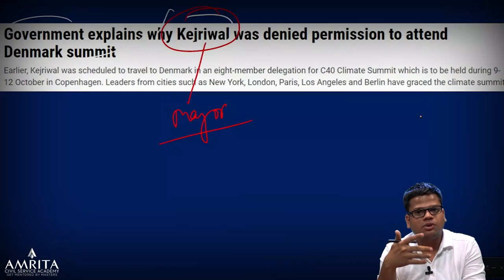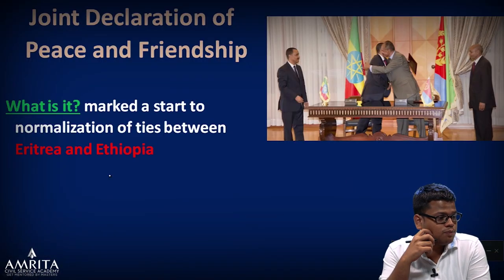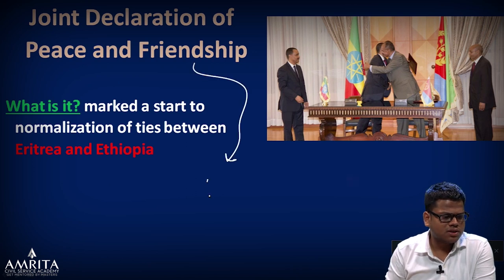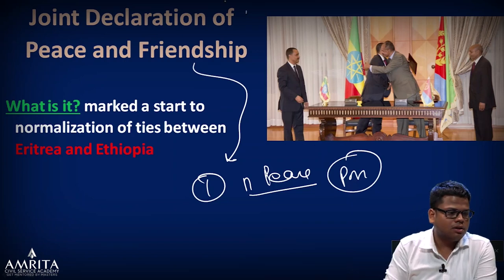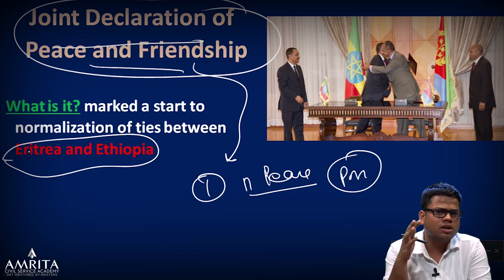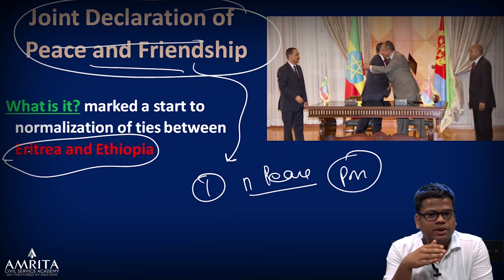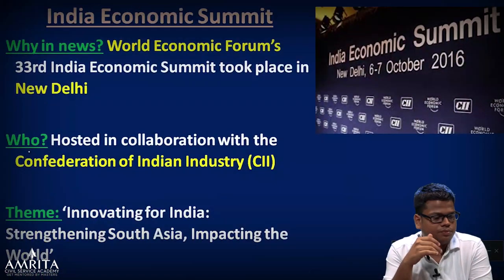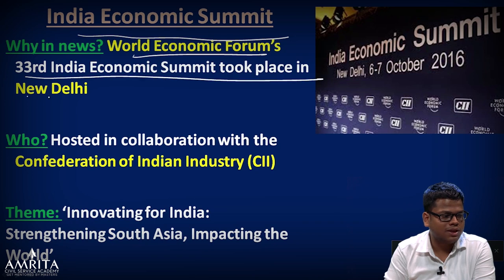The Joint Declaration of Peace and Friendship: the Nobel Peace Prize was given to Ethiopian Prime Minister Ahmed, and the declaration was a joint declaration of peace and friendship between Ethiopia and Eritrea, ending a 20-year war that brought misery to both countries. Next: World Economic Forum's 33rd Indian Economic Summit, held in New Delhi. To make notes efficiently, just list WEF's static details and then its initiatives — drone summit, Indian Economic Summit — in one go for easy revision.